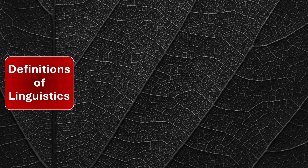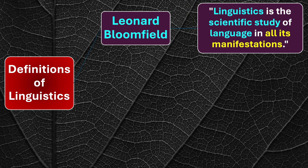Moving on to Leonard Bloomfield's definition of linguistics: 'Linguistics is the scientific study of language in all its manifestations.' There are two key points: scientific study of language, and in all its manifestations. Linguistics is not about artistic study — it applies the same scientific patterns and analysis as pure sciences. We look at the elements of language from a scientific and analytical point of view, analyzing each element, property, and component.